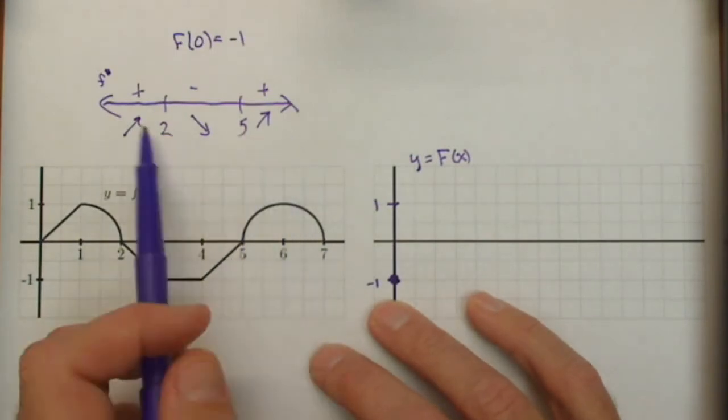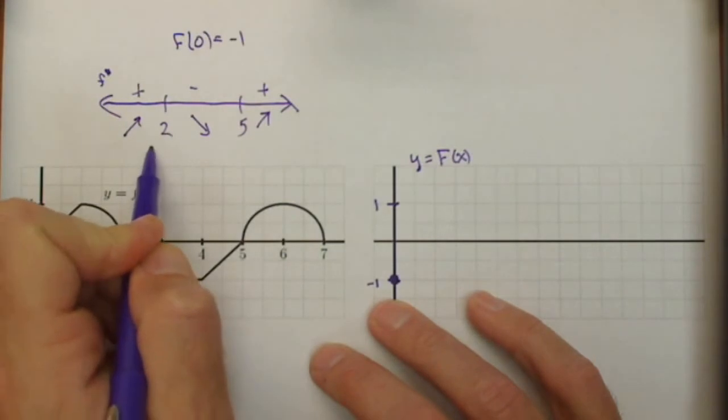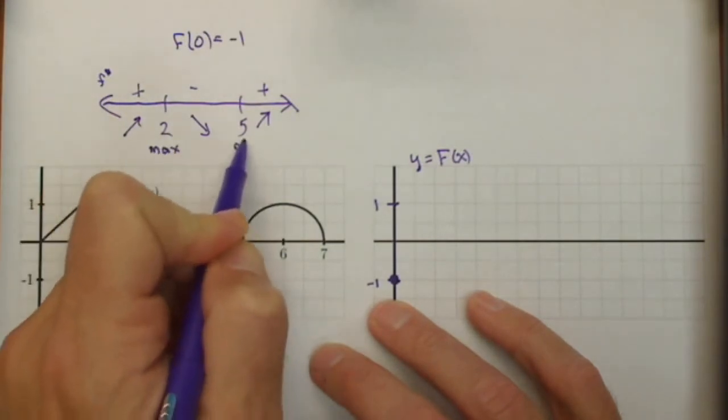Increasing from 5 to 7. So we have a min, or excuse me, we have a max at 2, and we expect to see a min at 5.